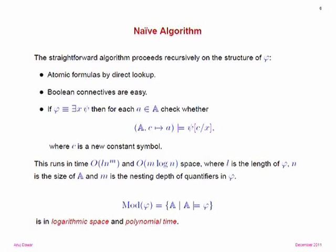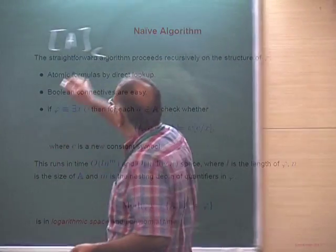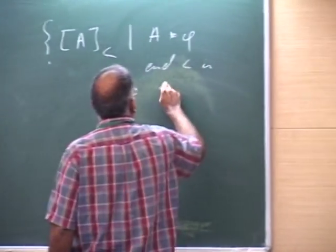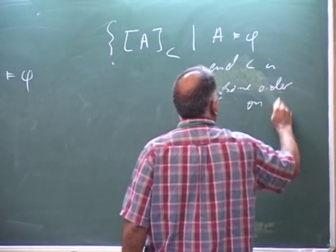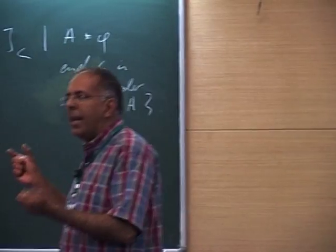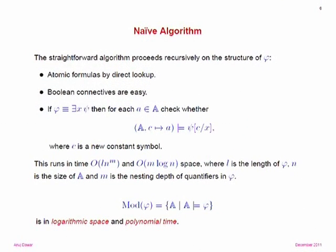Having fixed the idea of an encoding, we can ask about the complexity of the set of strings such that A satisfies phi. As Ramanujam pointed out, for fixed phi this is logarithmic space and polynomial time: specifically, time L times N^M and M log N space, where L and M are parameters depending only on the formula and N is the size of the structure. If L and M are constants (i.e., the formula is fixed), this is polynomial time in logarithmic space; otherwise it's exponential time in polynomial space.